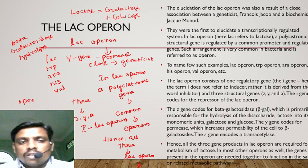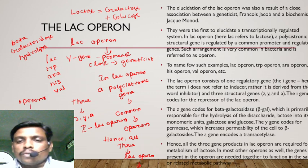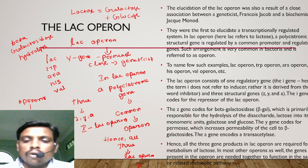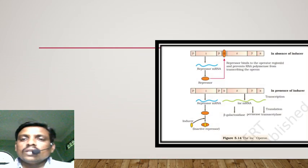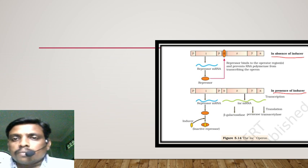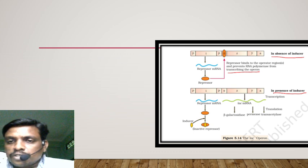In most operons, the genes present are needed together to function in the same metabolic pathway. In the absence of an inducer, the repressor binds to the operator region and prevents RNA polymerase from transcribing the operon. Whereas in the presence of an inducer, transcription and translation occur simultaneously.